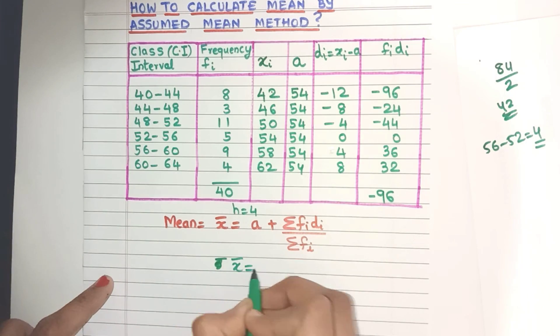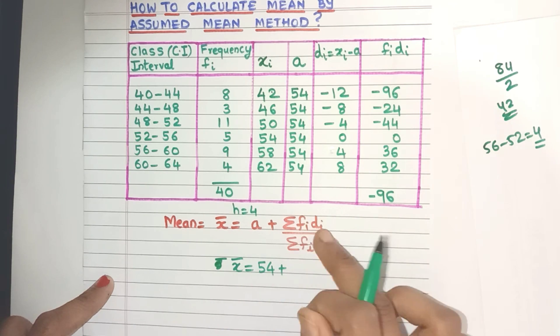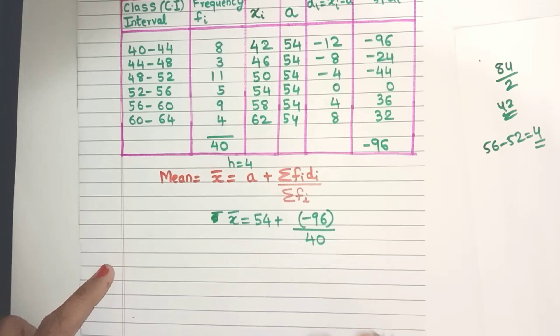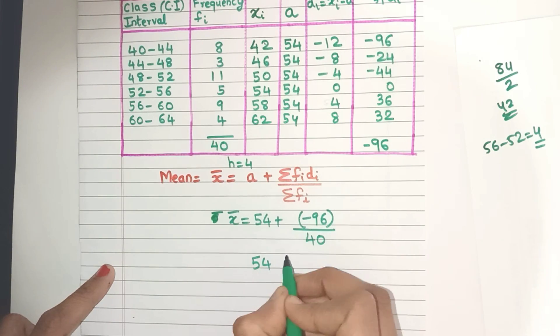So let's go ahead and substitute them in the formula. A is nothing but yes, 54 plus sigma fi DI is minus 96. So I'll just put it in a bracket. Sigma fi is 40. And let me just resolve this plus minus sign over here.